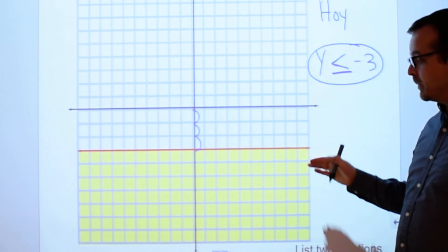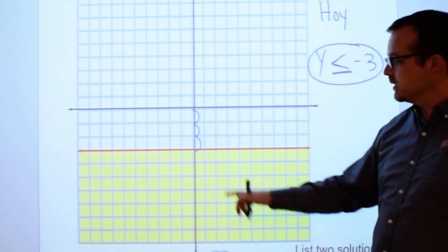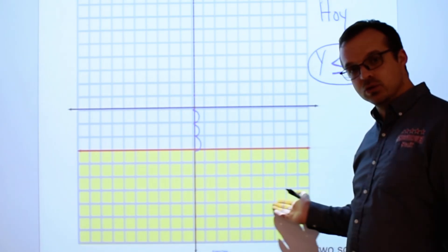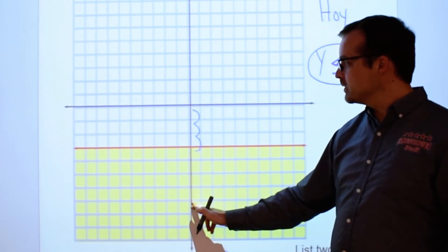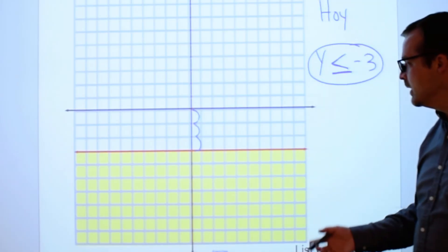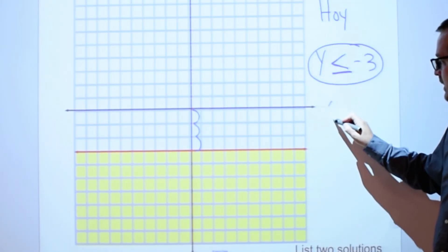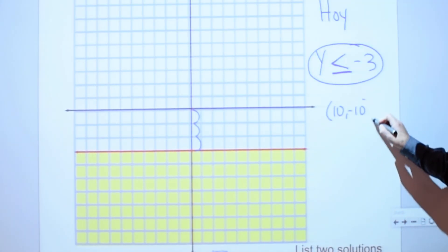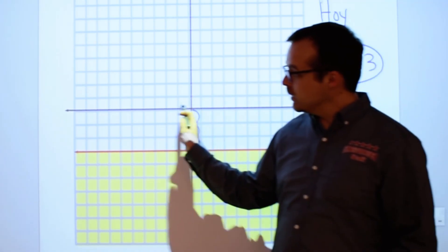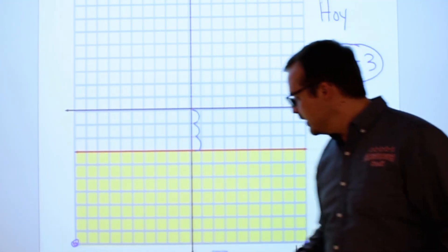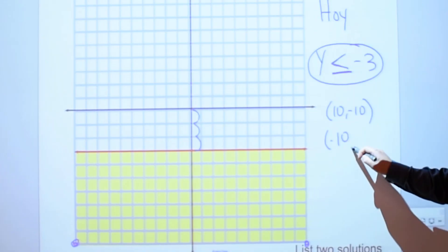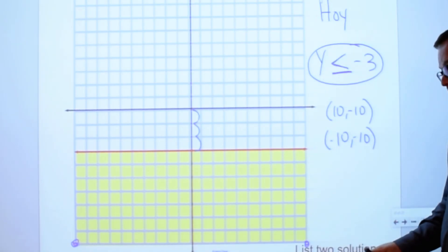To list two solutions, just two numbers, two ordered pairs, two ordered pairs within this shaded region. So we could go 10, negative 10 again. That would be fine. That would be this point down here. In fact, we could go negative 10, negative 10 as well. Those both are solutions. You should come up with your own, though.